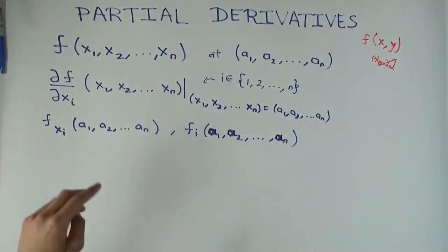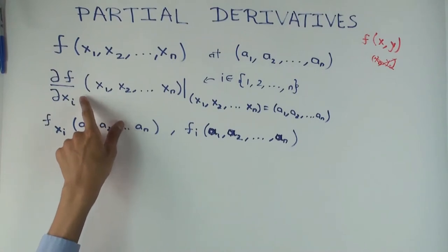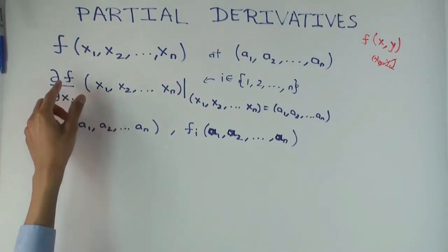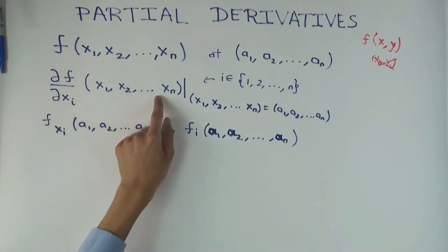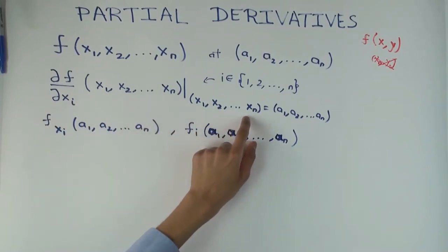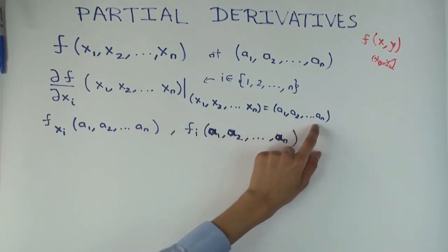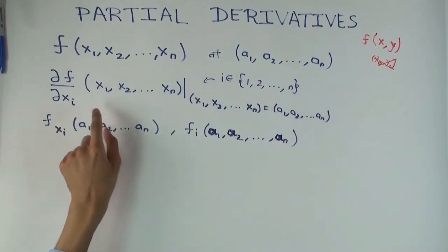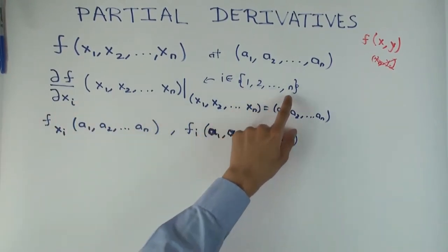Now the partial derivative with respect to xi is just defined like this, or not defined, denoted this way, df/dxi of x1, x2 to xn at x1 to x2 to xn is a1, a2, an.